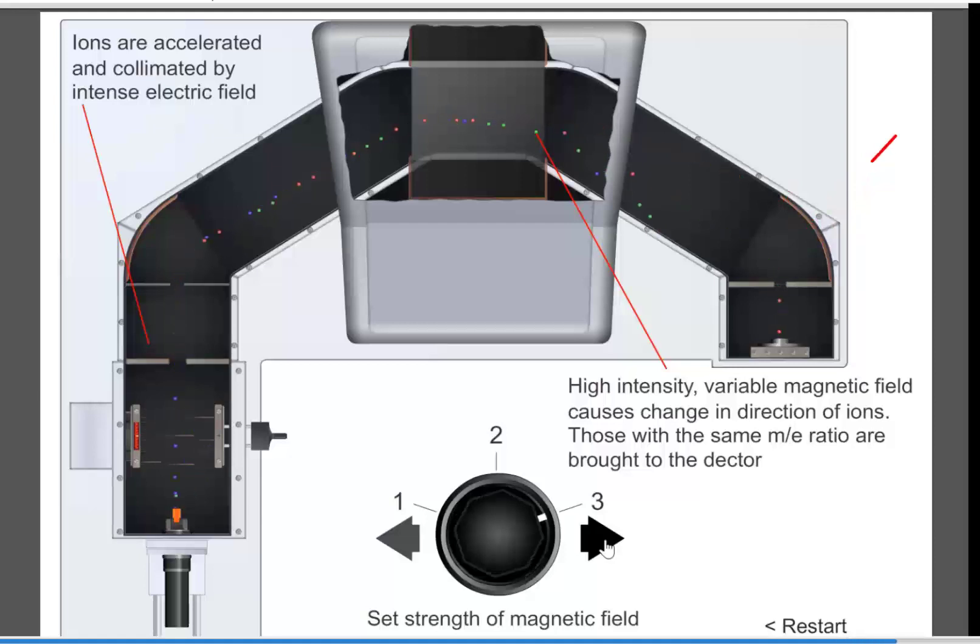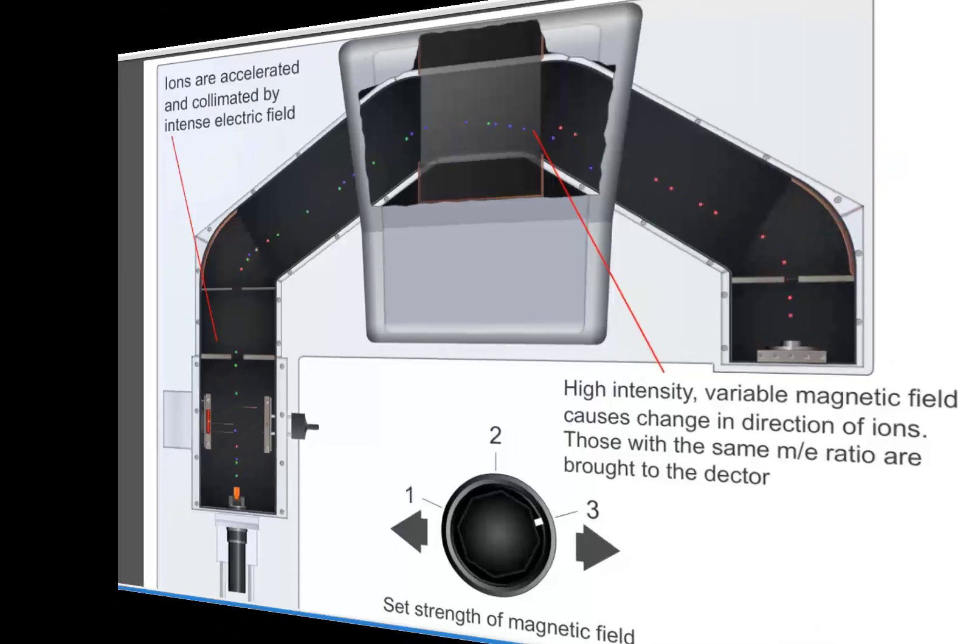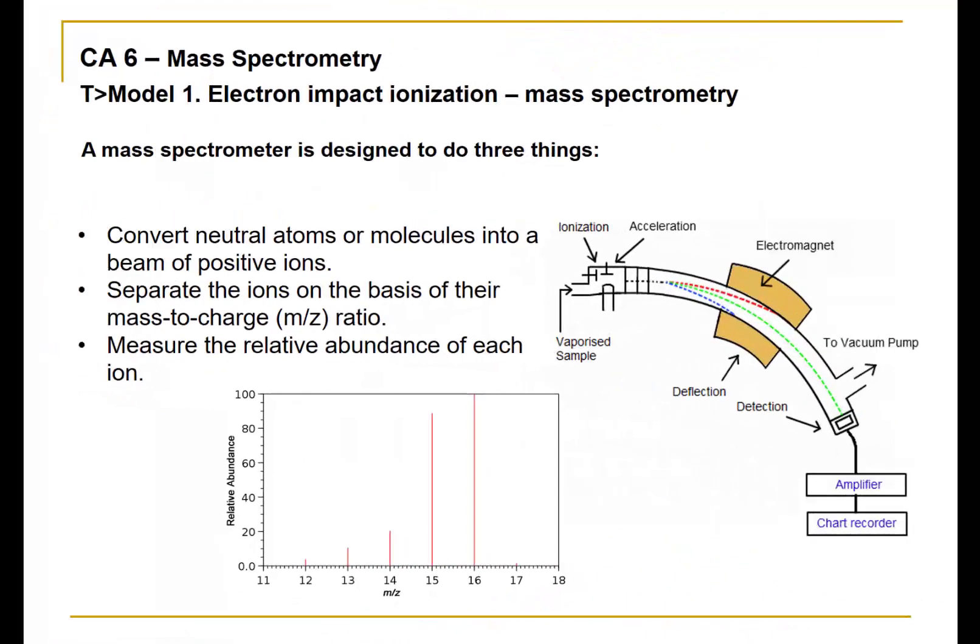Finally, the highest setting of the magnetic field allows for the heavier red particles to be detected. It is worth mentioning that normally, we will be looking at mass spectra that come from analyzing only one type of molecule. The different peaks will come from the fragmentation patterns of that molecule.